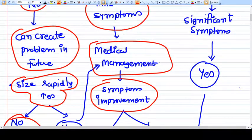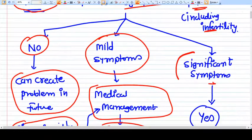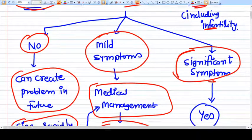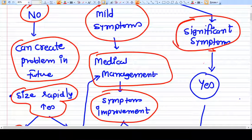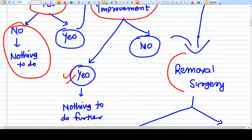But if the symptoms are not controlled by medical management then you have no option other than removing the fibroma. And if the patient has significant symptoms which you think are very significant and patient needed to be treated exactly, because again you should also think that the medical management of fibroid is not very successful, it's not 100% successful. The definitive management of fibroid is only surgical removal.